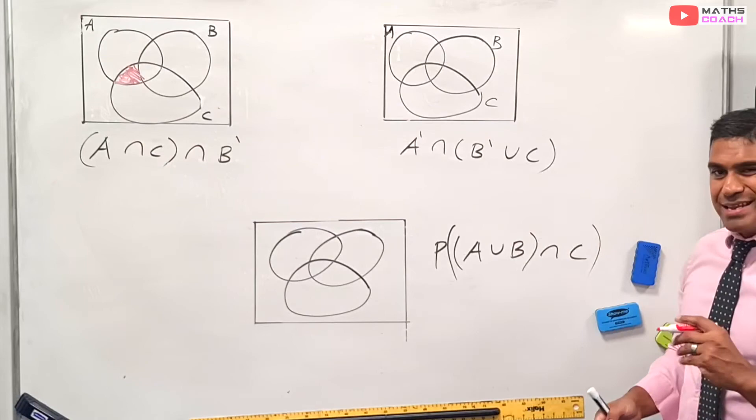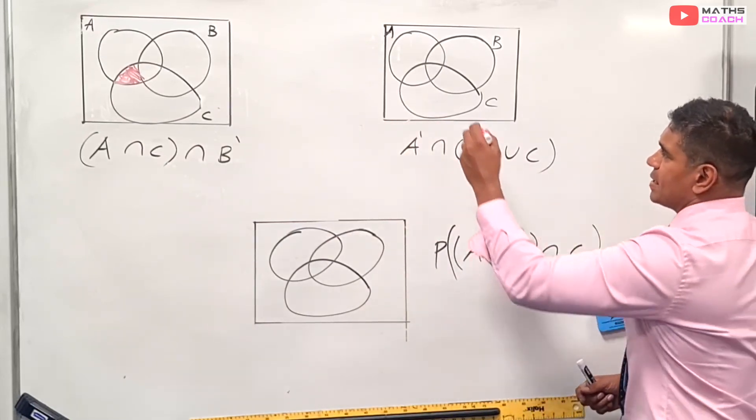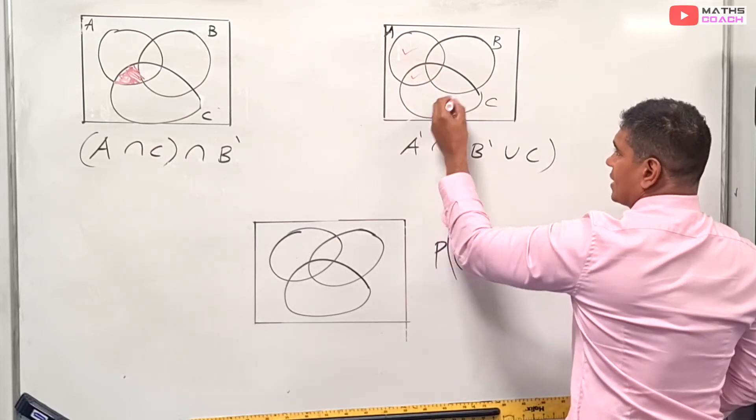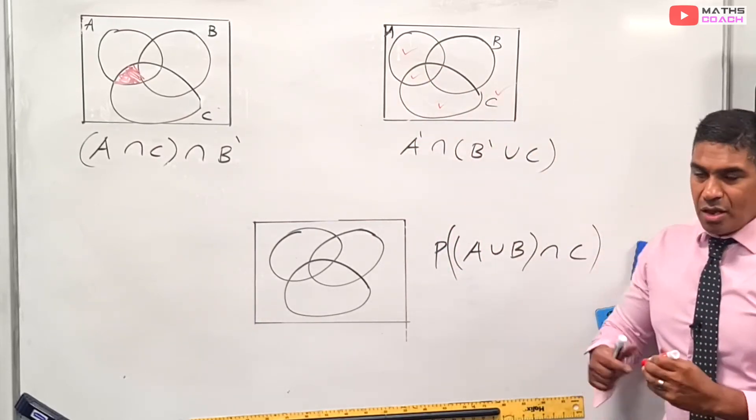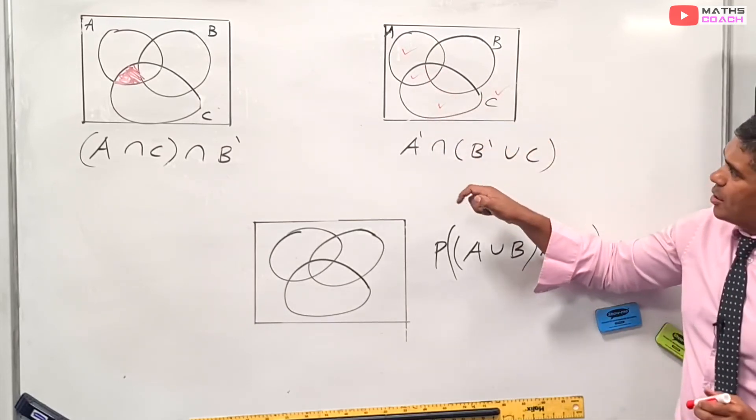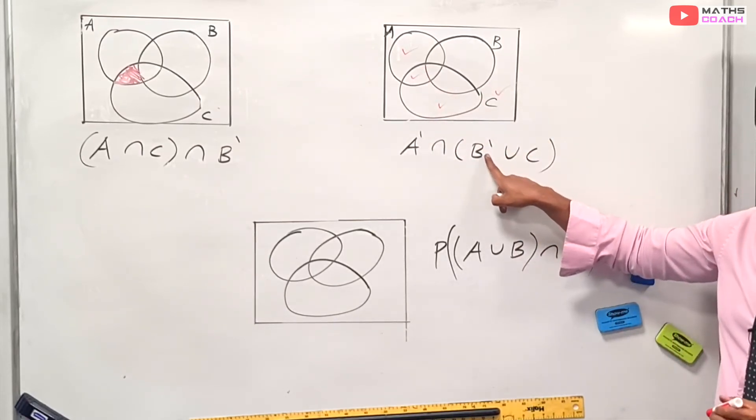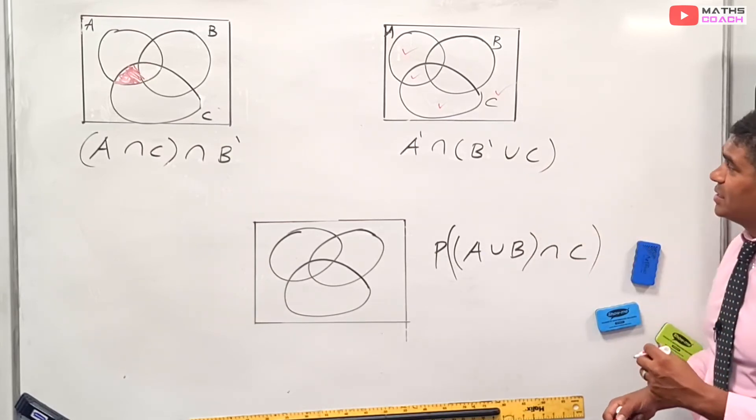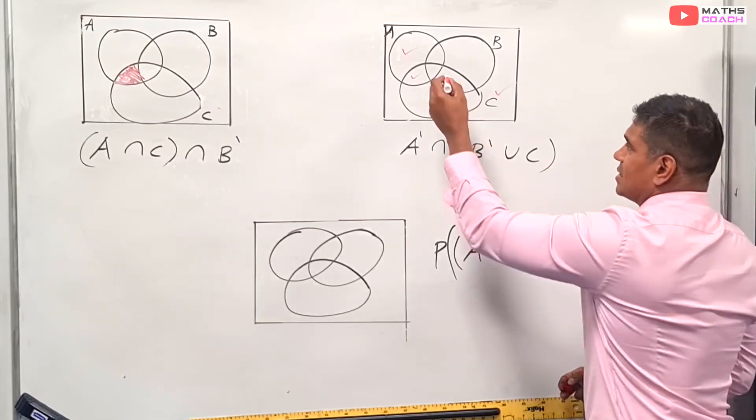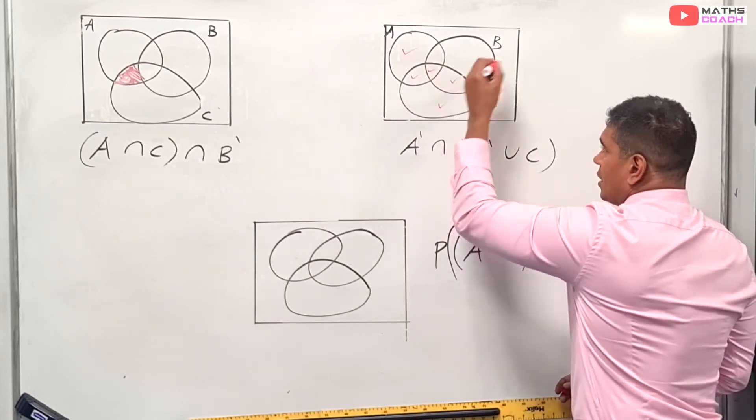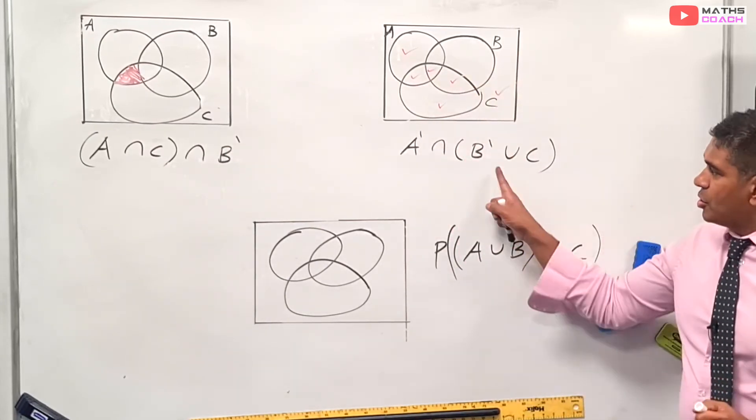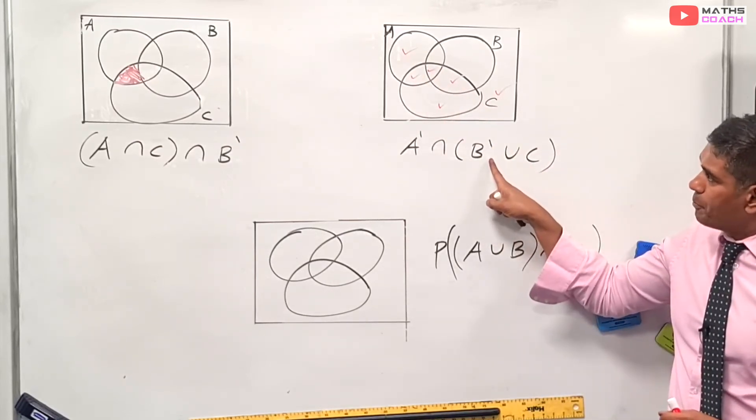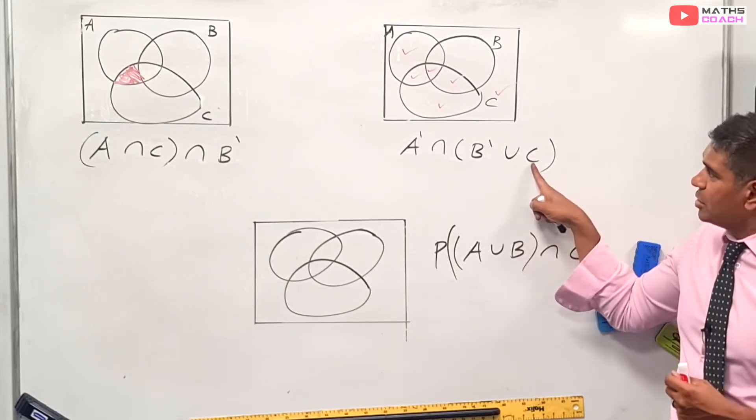B'. Well, B' means everything outside of B. So I could have that one, I can have that one, I can have that one, and I can have the outside. Now those four ticks there would represent B'. Union C means I can also have in addition to that, the letter C. So I can have that one, and that one. So those six ticks there would represent not B, in addition to C.